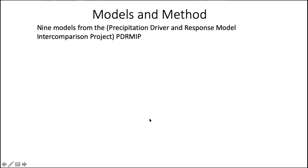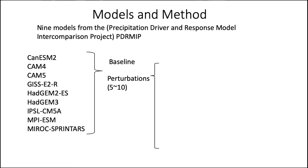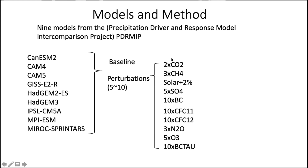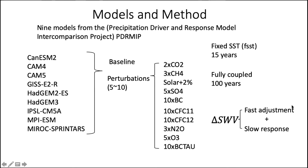To answer these questions, we use nine climate models. Each model has a baseline simulation with solar constant, greenhouse gases, and other forcings at present-day or pre-industrial levels, and each has five to ten perturbed simulations — abrupt, global perturbations relative to baseline. For example, tripling methane means three times the methane in the baseline. Each simulation has two configurations: a fixed SST run for 15 years, and a fully coupled run for 100 years, used to compute stratospheric water vapor response split into fast adjustment and slow response.